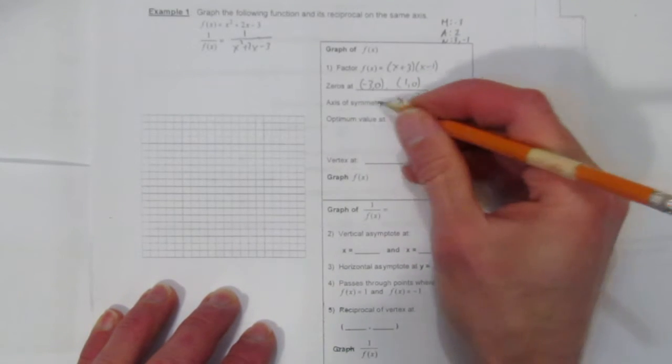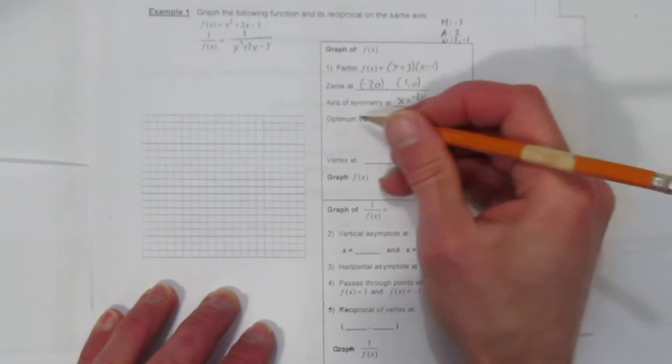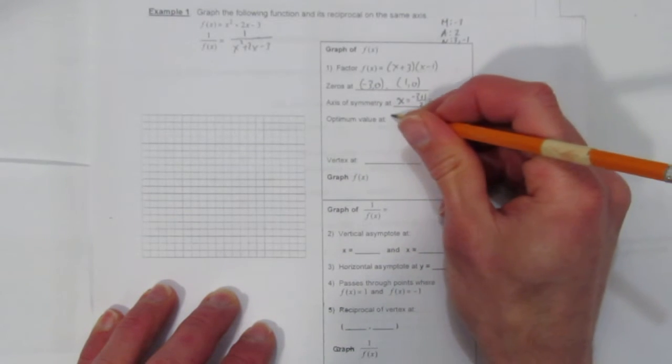That's the x value of the vertex, or the axis of symmetry. Where's the y value of the vertex, or the optimal value? Let's sub that in.